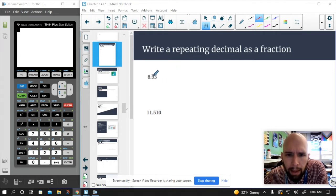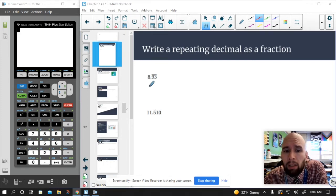A repeating decimal, when you have a line over a number or a group of numbers, that means that number goes on forever in that pattern.